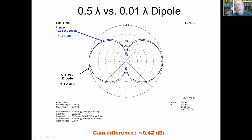The blue one is the short antenna and it's just a little bit fatter in pattern, and therefore it has a little bit less maximum gain at the maximum direction.